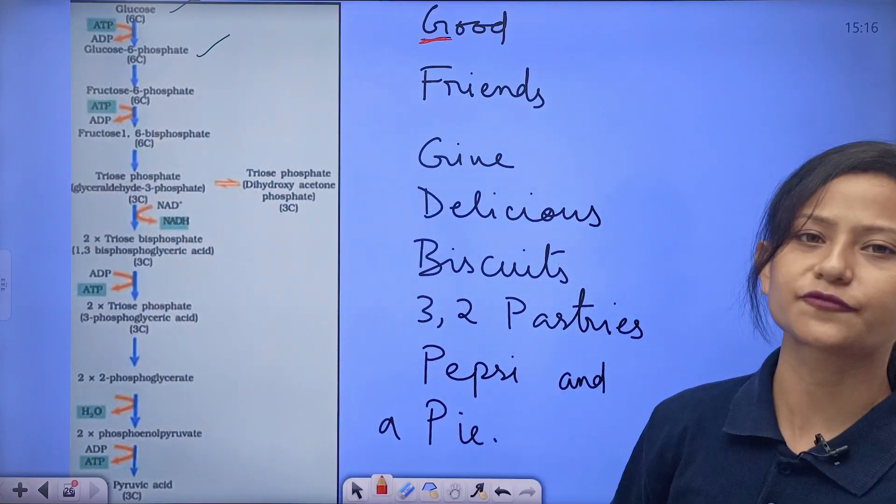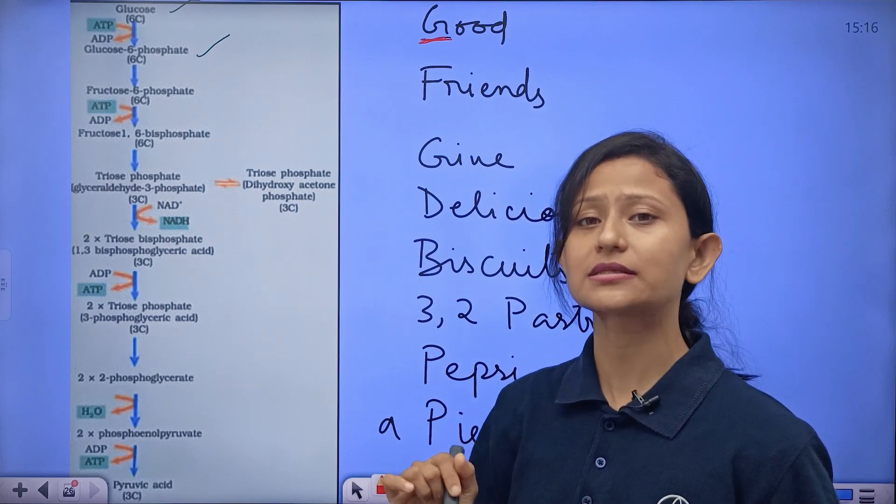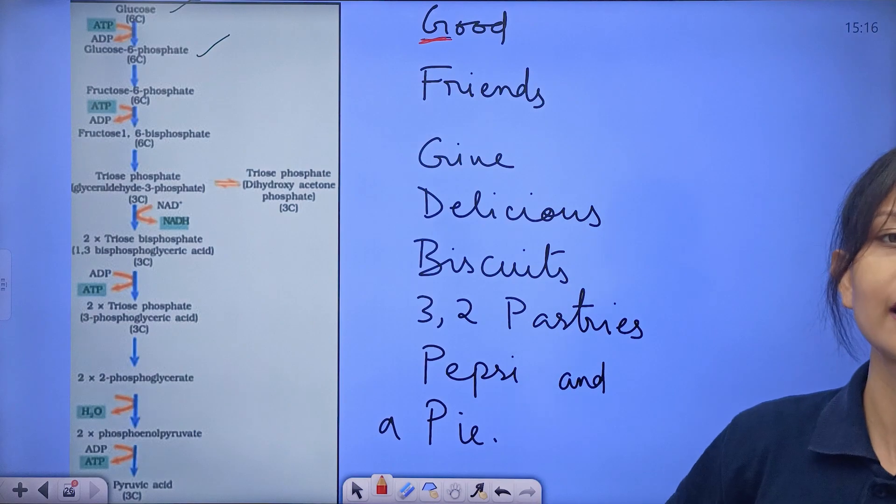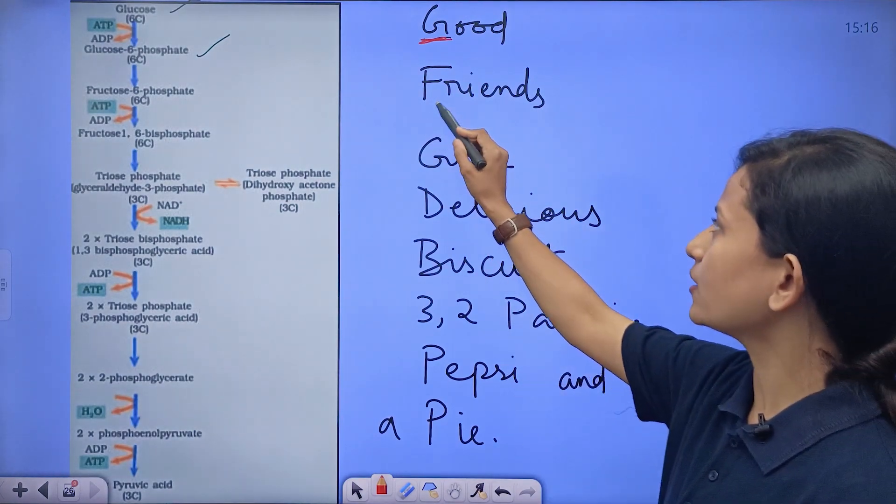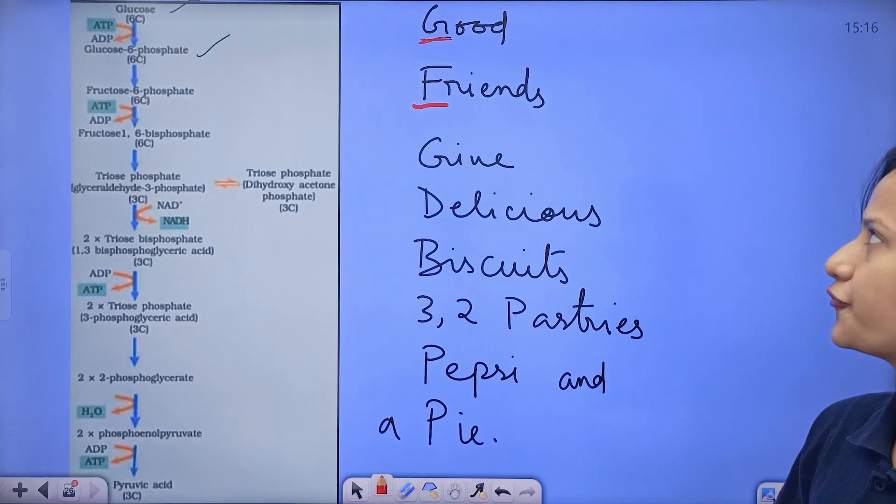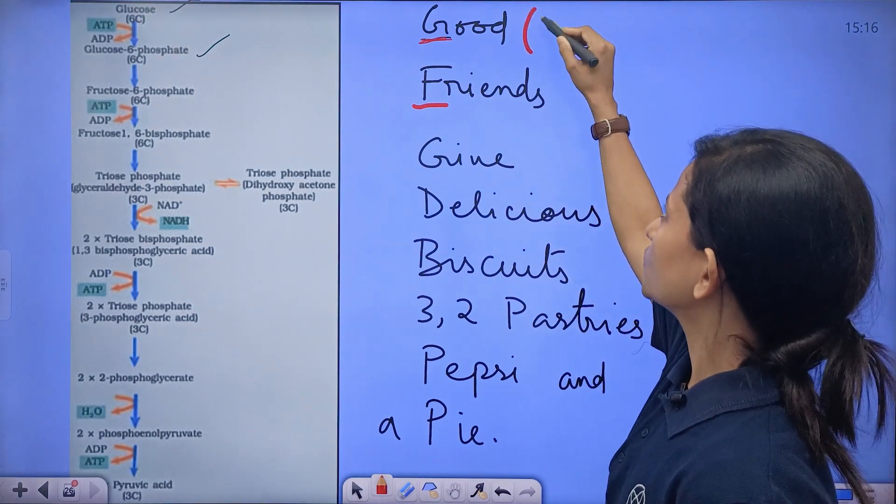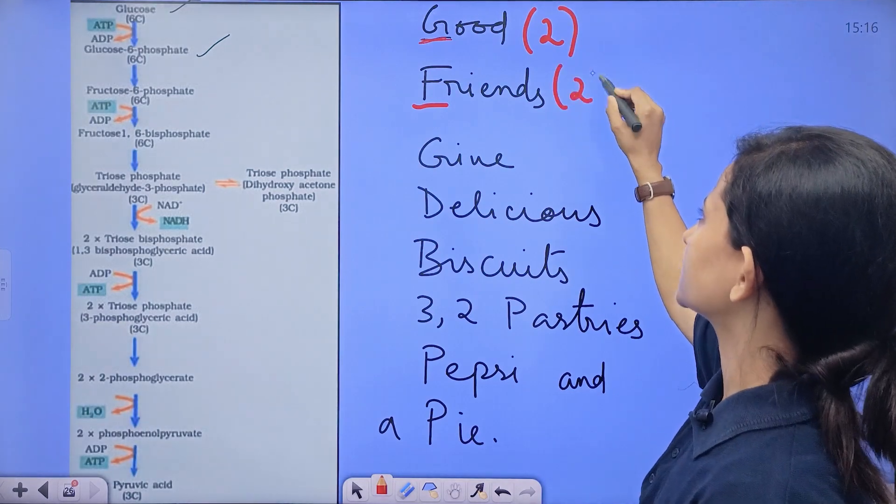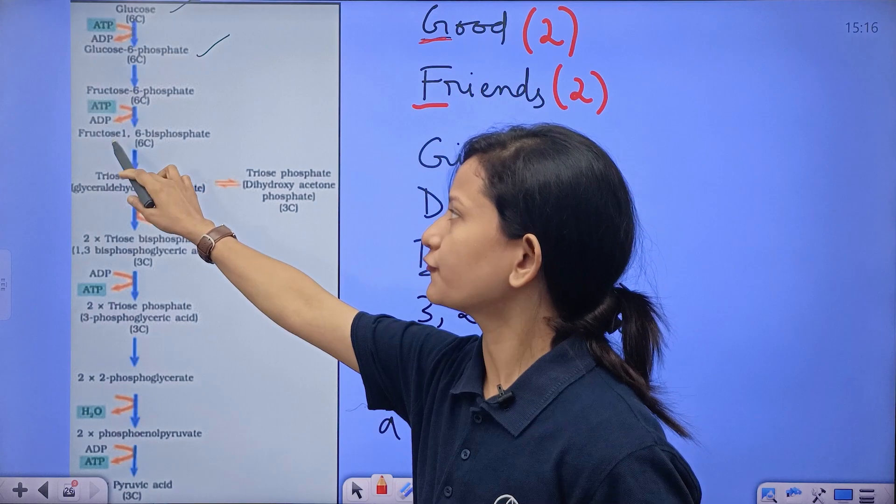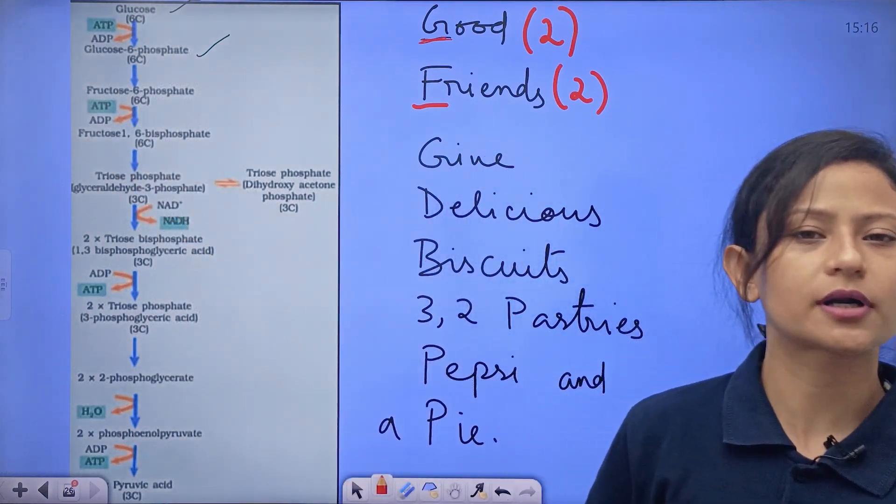And fructose 6-phosphate again breaks down into fructose 1,6-bisphosphate. There are two products from fructose. So good friends: G represents two products, F also represents two products. Give means fructose 1,6-bisphosphate, which divides into two products.